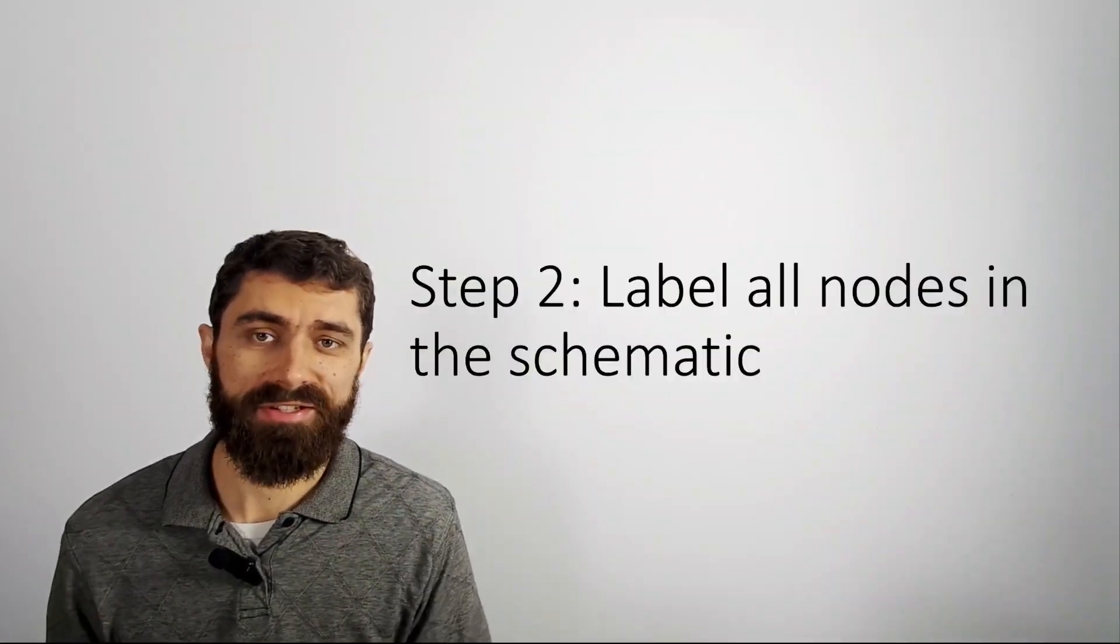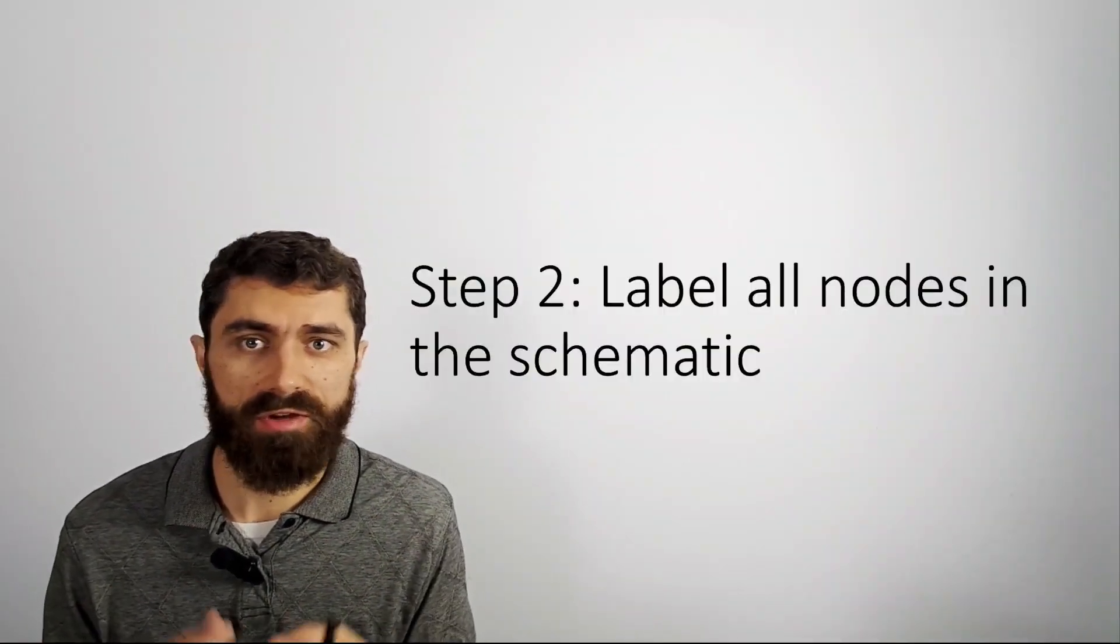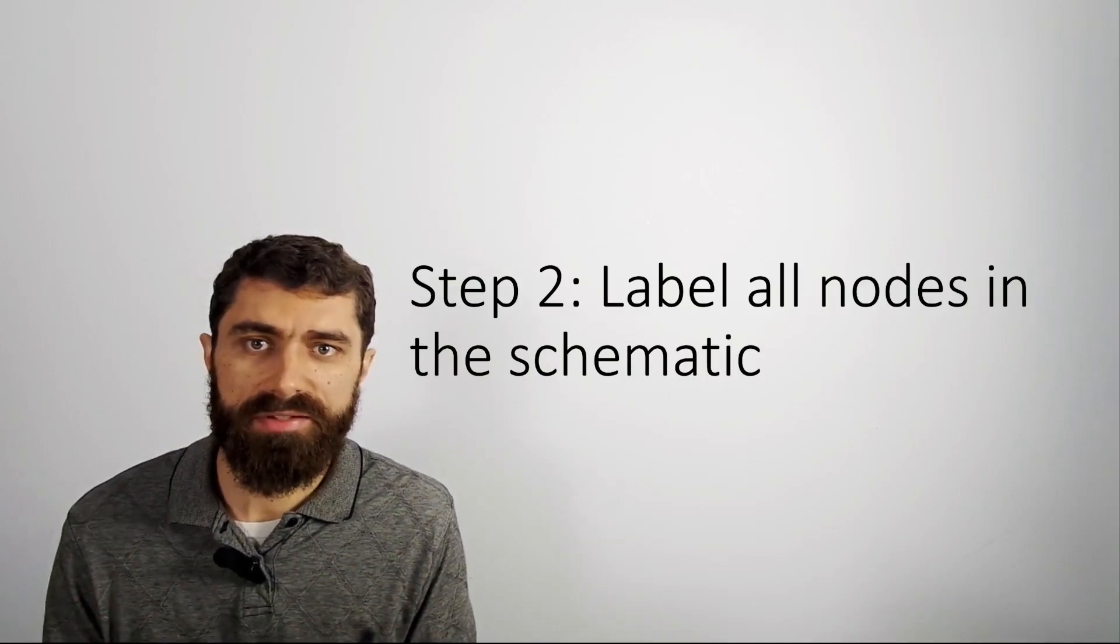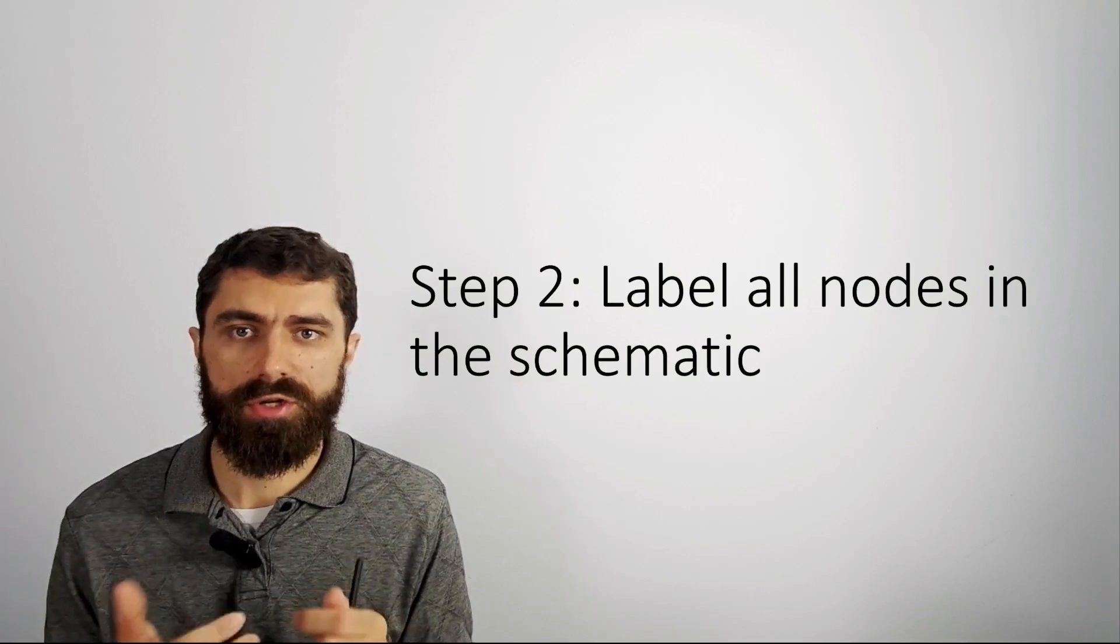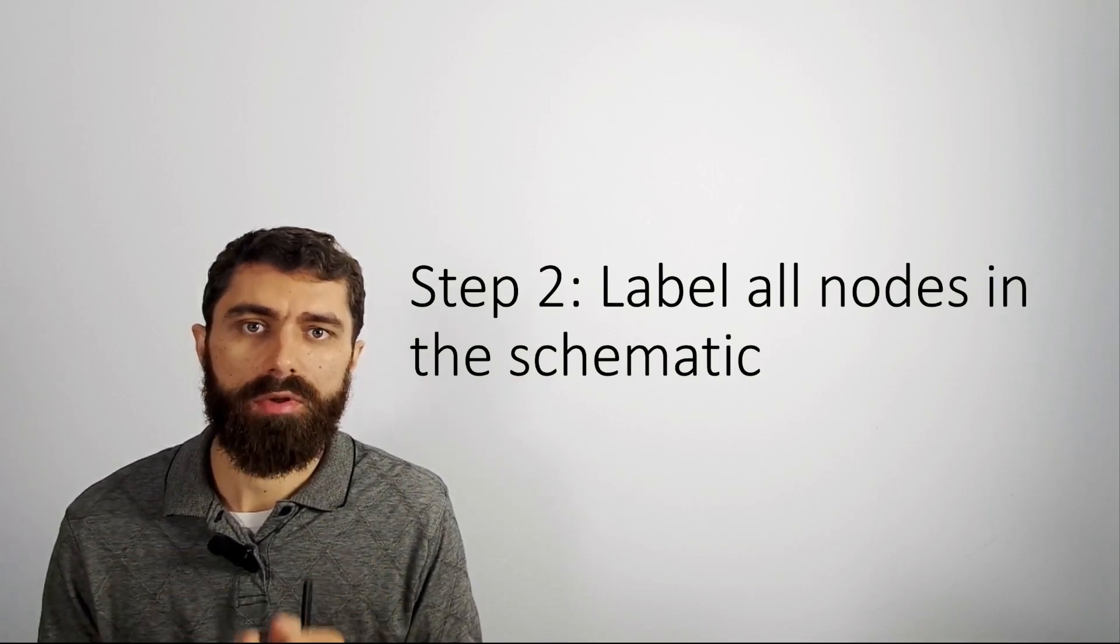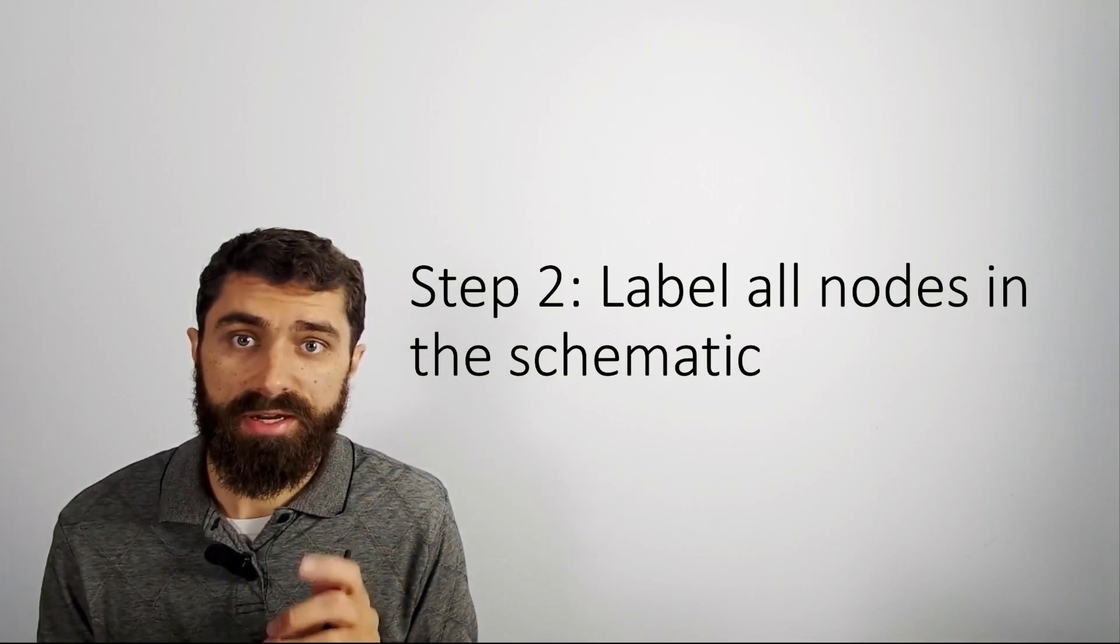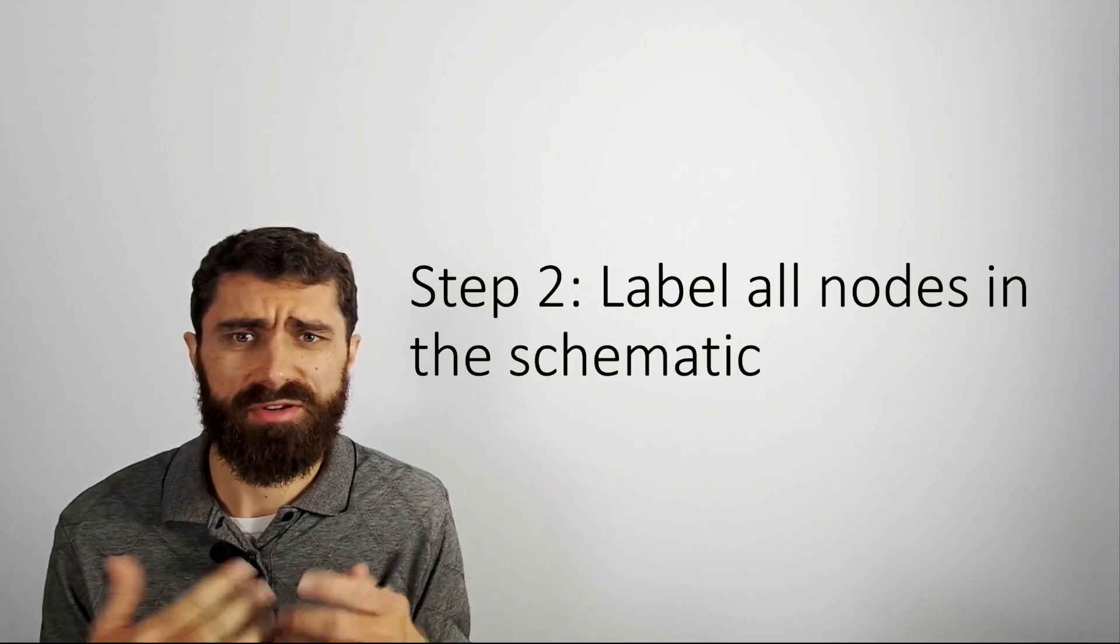Once you've collected all of your components and identified all the pins and symbols, the next step is to go to your circuit schematic and label all nodes in the schematic. Sometimes they're also called nets.